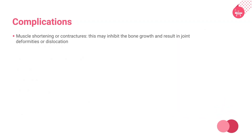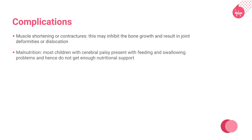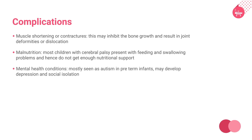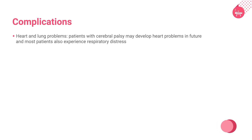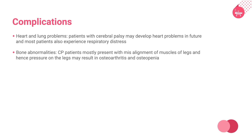Children with cerebral palsy are always exposed to certain complications like muscle shortening or contractures, which may inhibit bone growth and result in joint deformities or dislocation. They also present with malnutrition due to feeding and swallowing problems. Mental health conditions, mostly seen as autism in preterm infants, are common, and most people develop depression and social isolation. Other health problems include heart and lung disorders, and bony abnormalities like osteoarthritis and osteopenia due to pressure on misaligned legs and muscles.